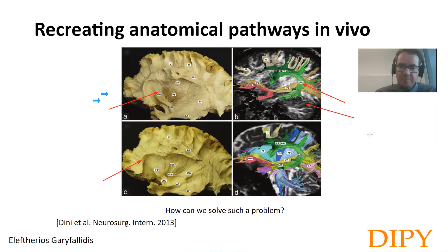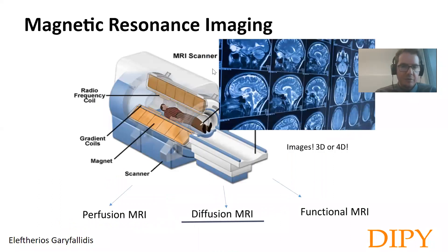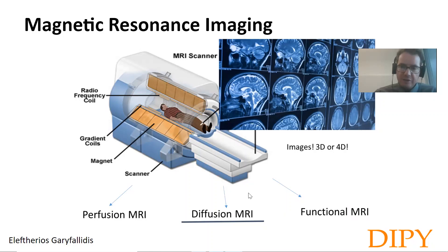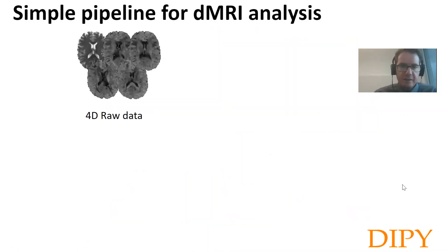MRI provides datasets that can be used, and this was shown very well from Basser's work. But while taking datasets from MRI scanners and trying to understand how diffusion MRI works, I realized very quickly that this is a very, very hard problem.